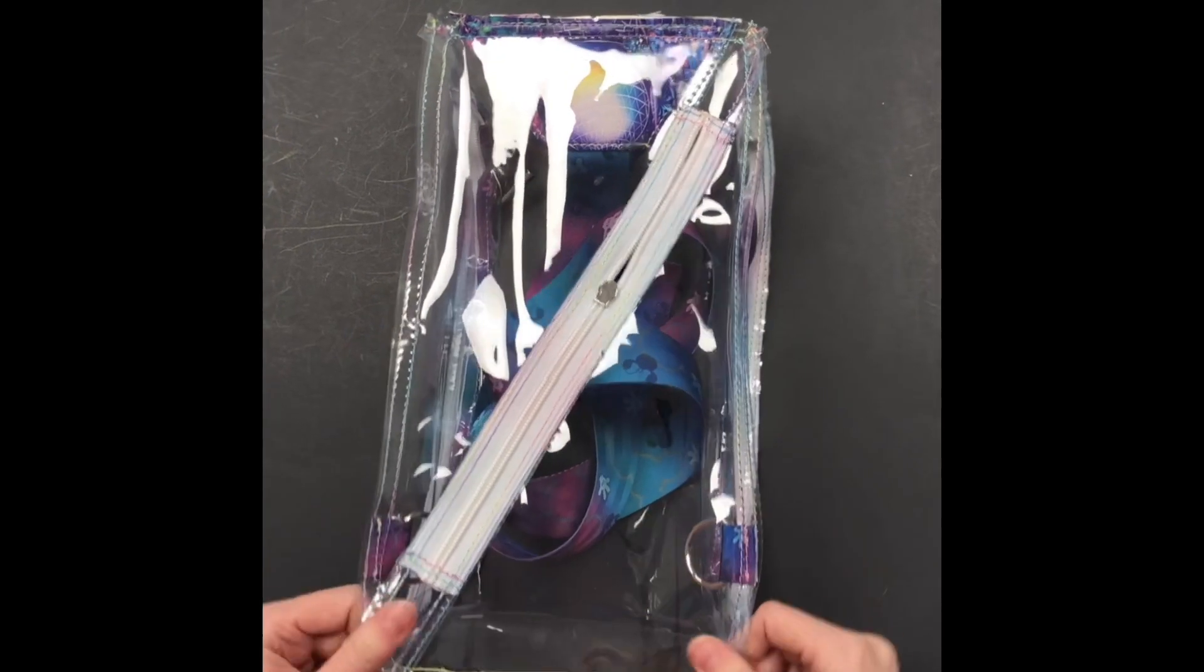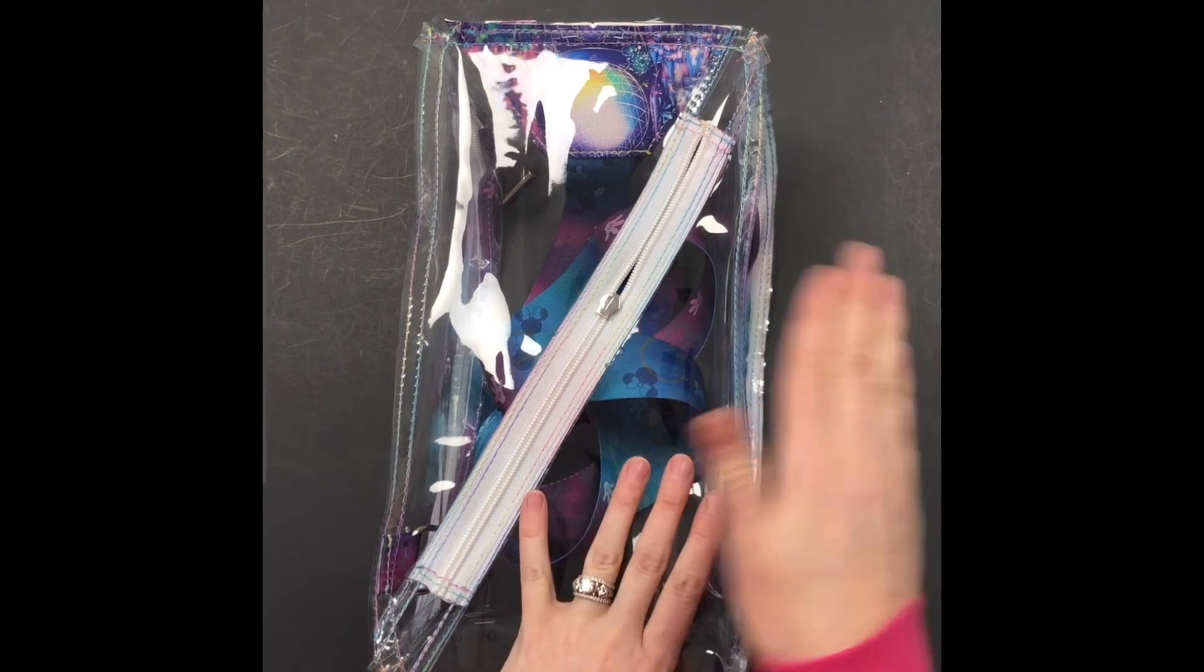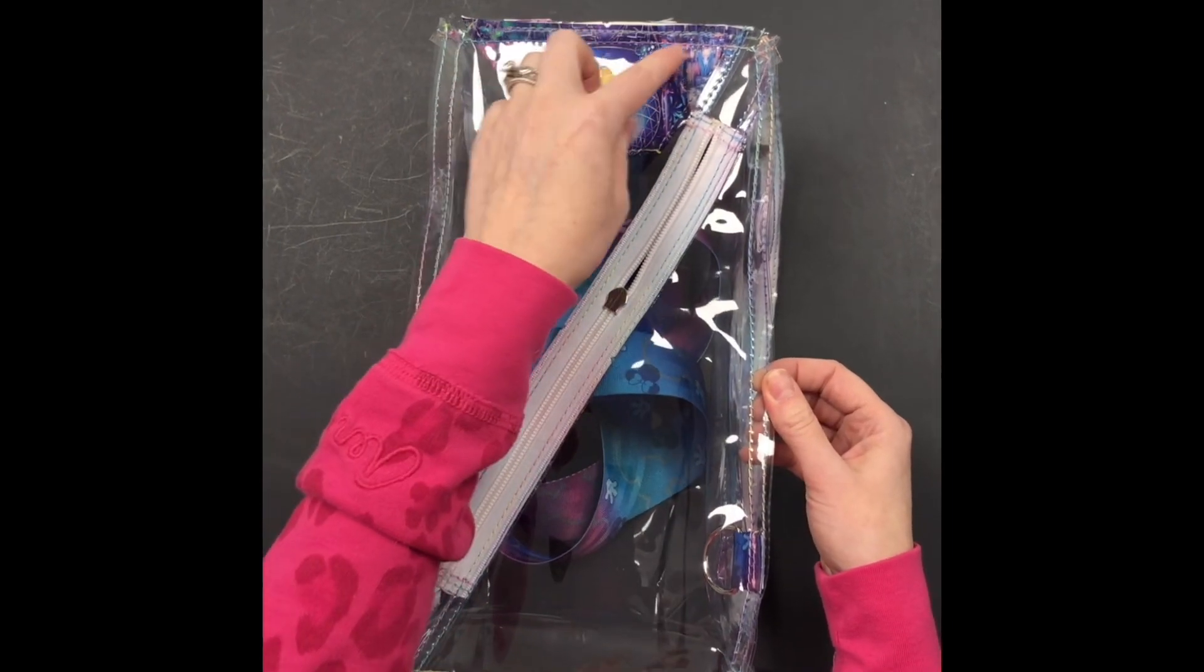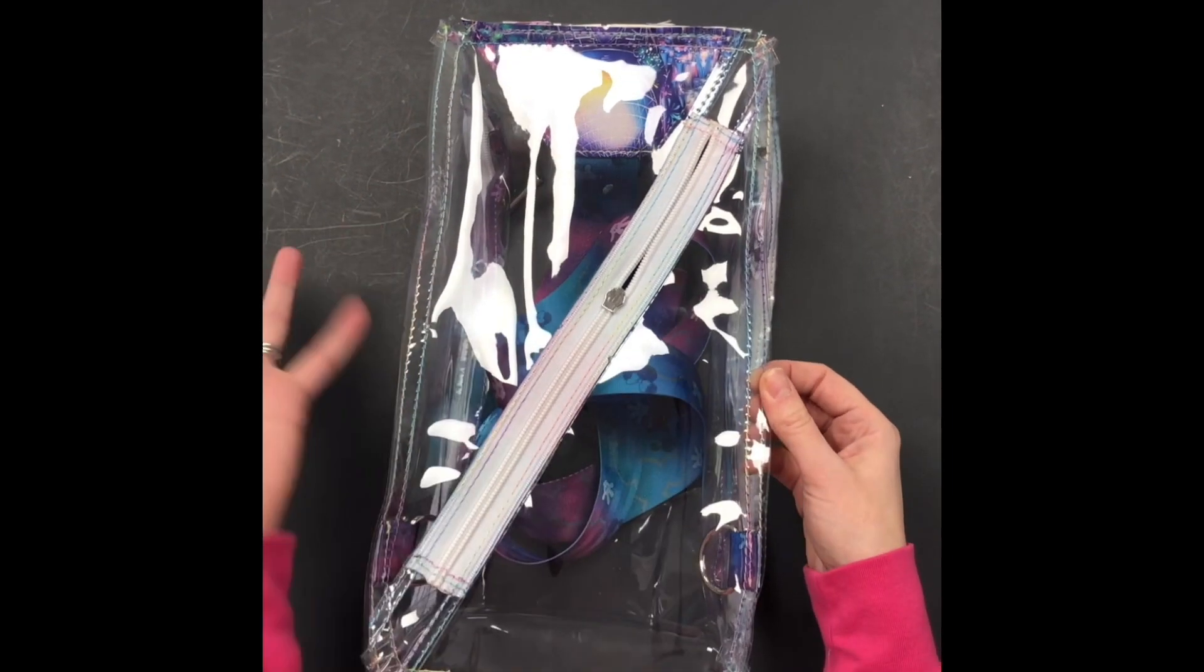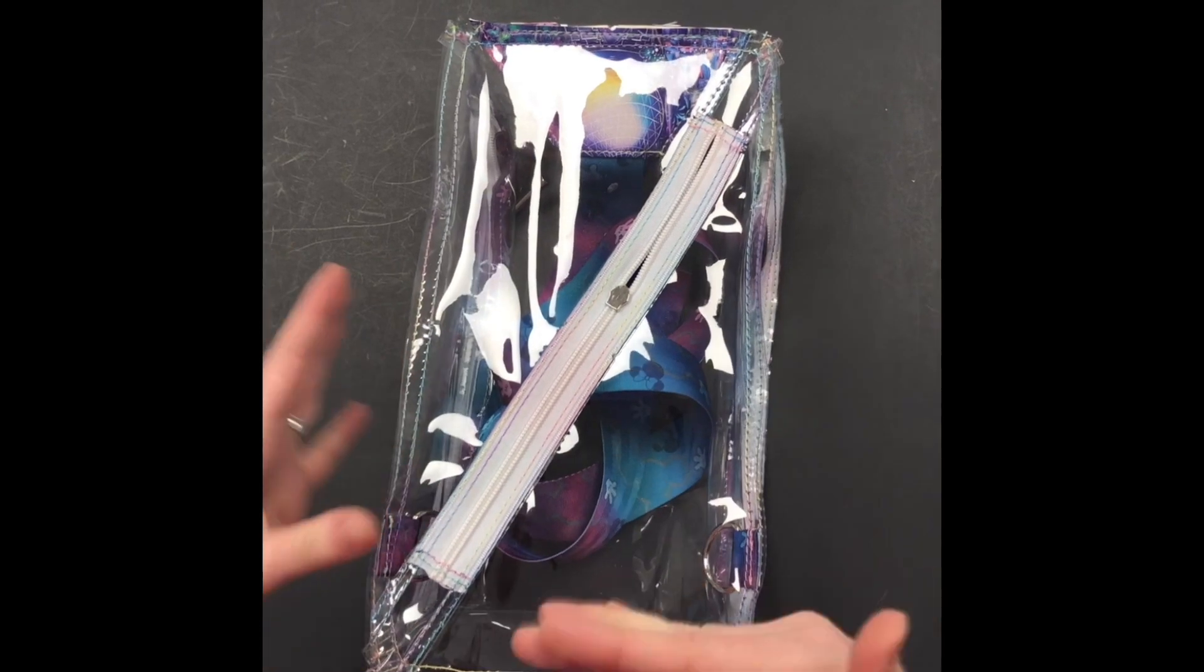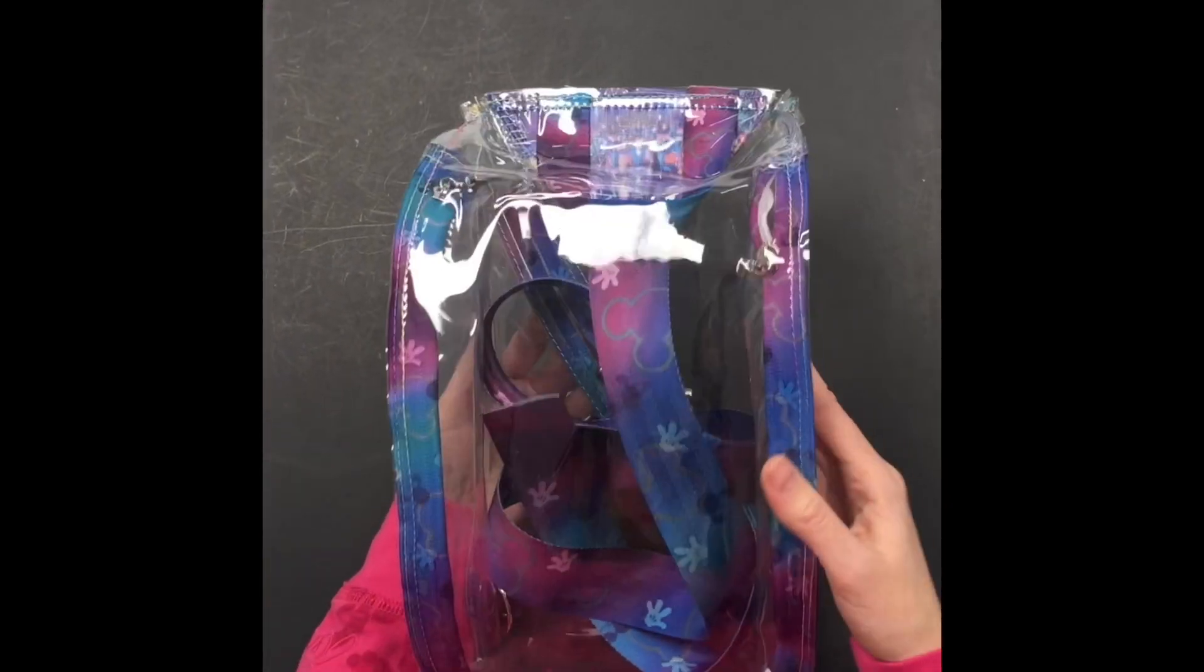The only thing now, I'm going to trim down to a quarter inch seam allowance on this, and I'm choosing not to do any bias tape because this is vinyl—nothing really frays here. And then I felt like it would just draw more attention to my seams on the inside, but you're welcome to bind things if you feel more comfortable.